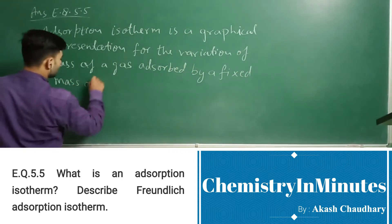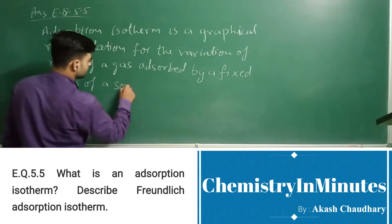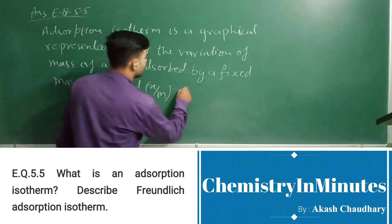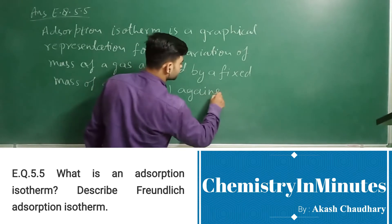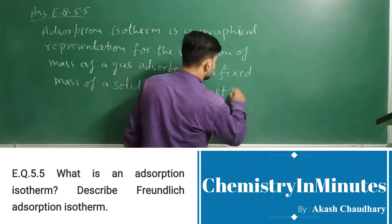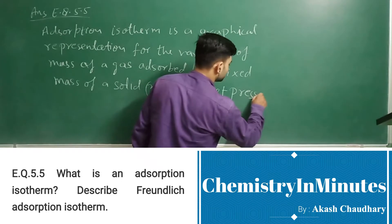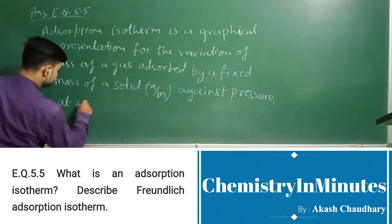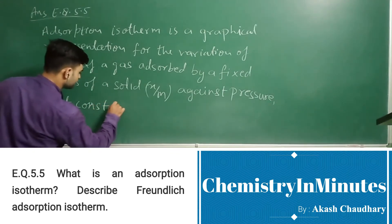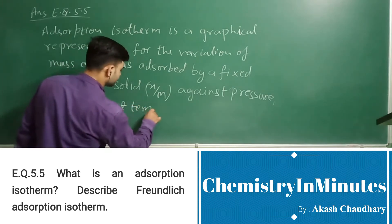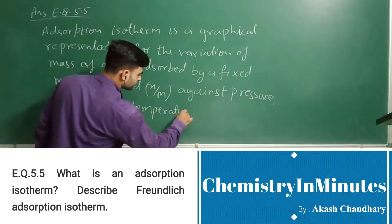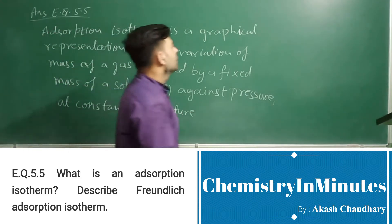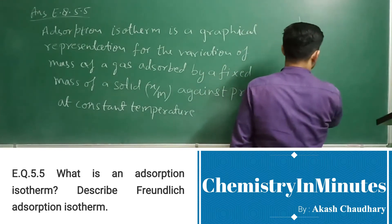...of the variation of the quantity of gas adsorbed by the solid. So this is x by m plotted against pressure at constant temperature. This is the definition of an adsorption isotherm. The graph looks somewhat like this.